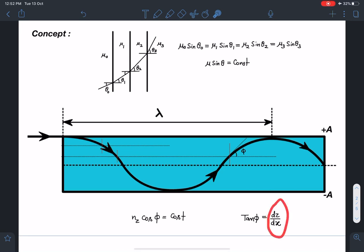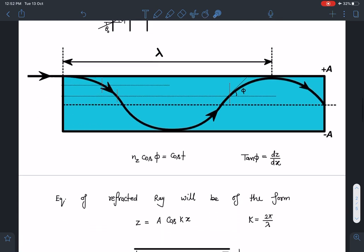Similarly here I can say this is going to be the tangent, slope of tangent. So tan phi is going to be dz by dx. If it was y dy by dx we would have written, but it is z x graph, so tan phi will become dz by dx.